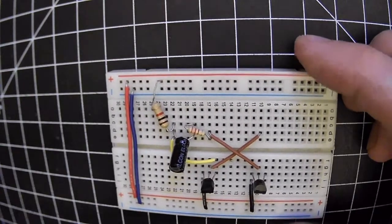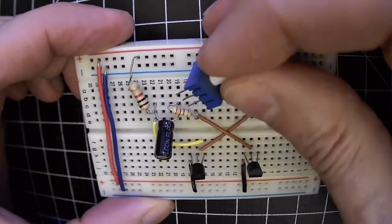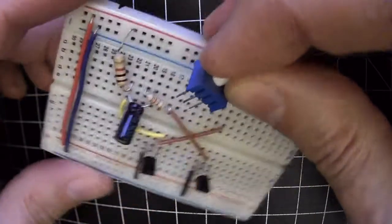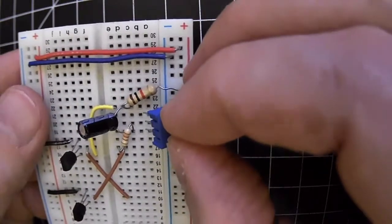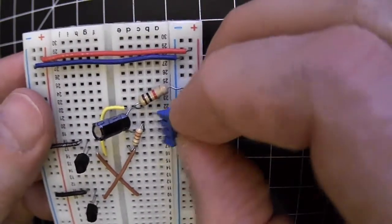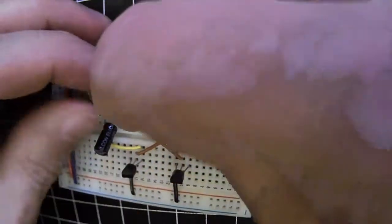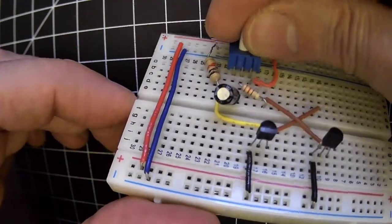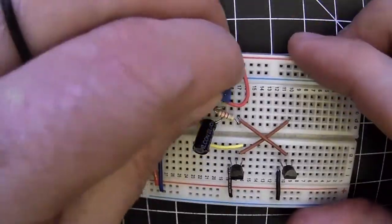And then the last component on this side is that there's two legs of a pot, so this is a variable resistor that's being connected between the resistor there that's going to the base and also to the red rail. So I'm just using the wiper and one of the outer legs of that pot.